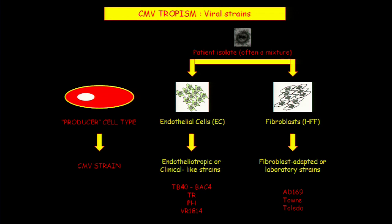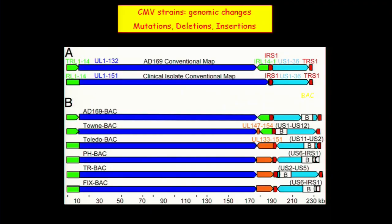AD169 and Towne are the live attenuated vaccines. Toledo was considered more virulent, but later it was found that virus is highly mutated too. If you propagate the virus in different producer cells, you get different strains with slightly different genomes. There are some deletions, insertions, and inversions, which are relatively easy to find by aligning genomes of multiple strains. What's harder to find are single mutations interspersed throughout the genome that could hit open reading frames with unknown protein functions — these may be relevant to tropism but are much harder to identify.